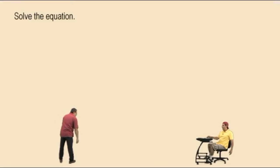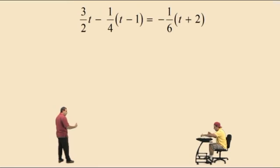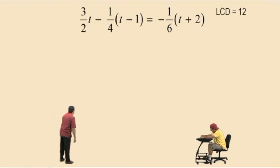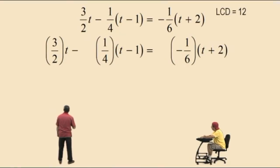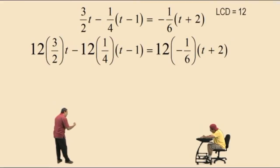Solve the equation. Here's our equation — don't get scared. Now remember, we have fractions, but we can clear those fractions out. We can kung fu them by using the lowest common denominator for all of our fractions. Charlie, look at all your fractions — what is the lowest common denominator? Twelve. Very nice, Charlie — it is twelve. Now remember, we're going to multiply both sides of our equation by twelve and distribute. So be careful here. We have twelve times three-halves times t, subtract twelve times one-fourth times the quantity t subtract one, and that's equal to twelve times negative one-sixth times the quantity t plus two.